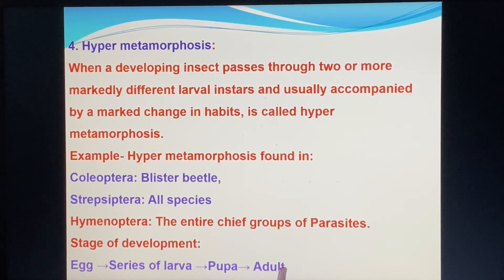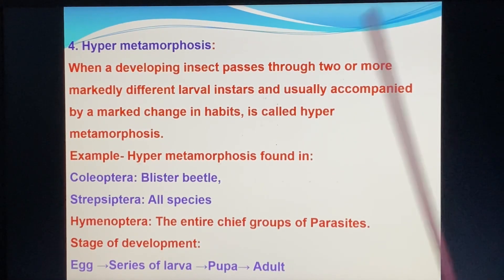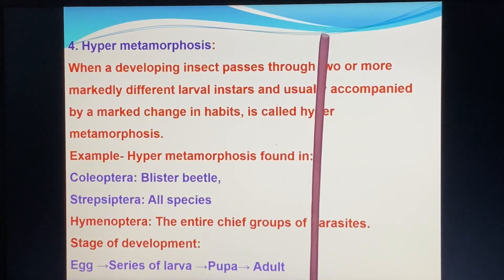The larval stages include: first larva, second larva, to a series of larval stages, then pupa — that is, the pupal stage of flies — and then adult.